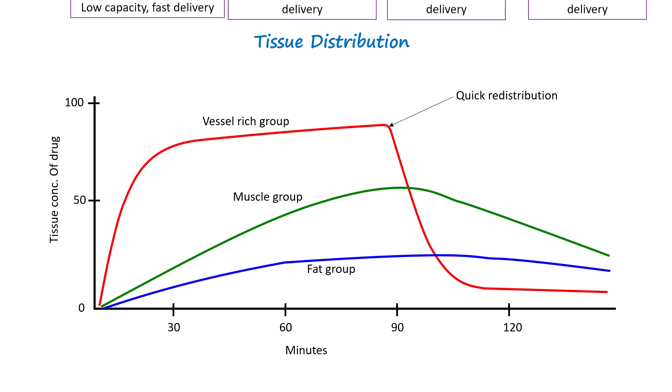The highly perfused tissue releases the anesthetic quickly due to rapid equilibration with the blood. The muscle group releases the anesthetic at a moderate rate, while the fat group, with its high capacity and low perfusion, releases the anesthetic very slowly, often prolonging the recovery. This differential redistribution affects the duration and offset of anesthesia, with adipose tissue acting as a reservoir that delays recovery.